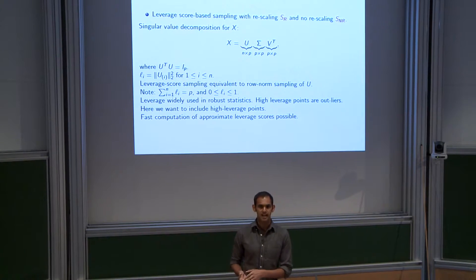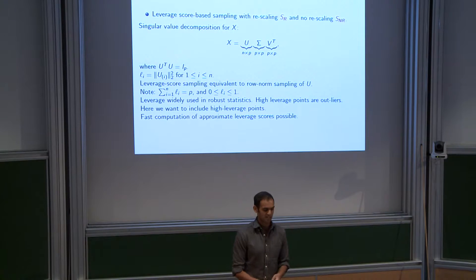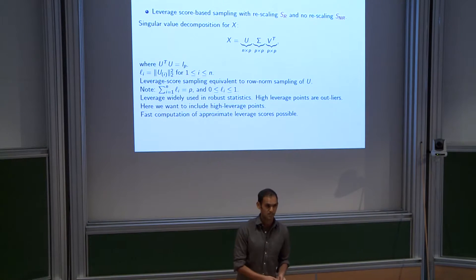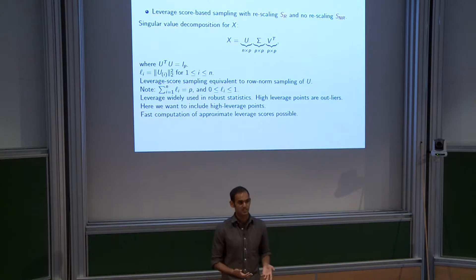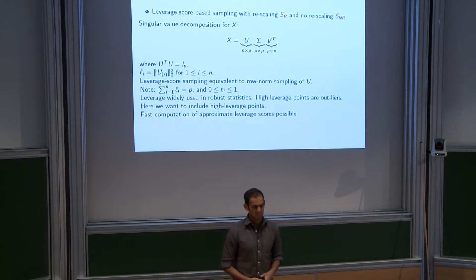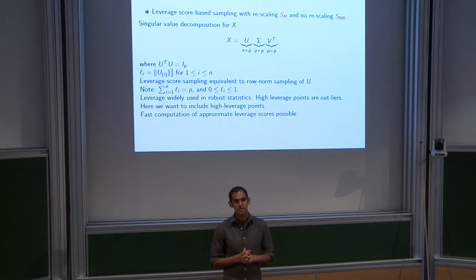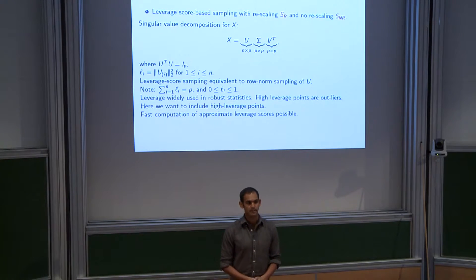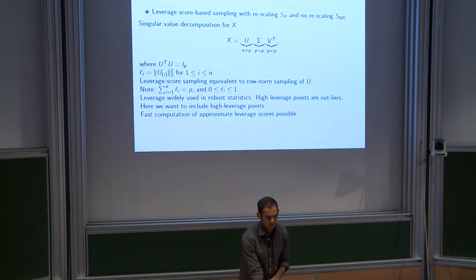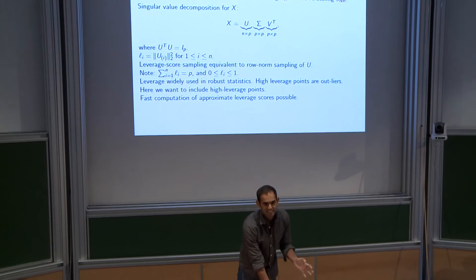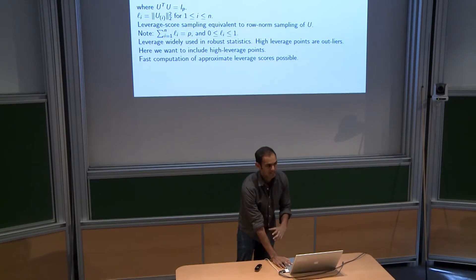A natural question is: to get the leverage scores we need to compute an SVD, which is the same computation as OLS — so why are we doing this and are we gaining anything? There is other work by Drineas and Mahoney showing that you can compute approximate leverage scores fairly efficiently — with computation of order NP — so this computation isn't as hard as solving the original problem.